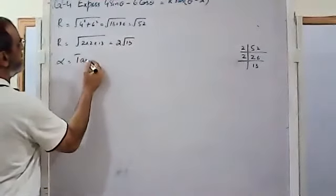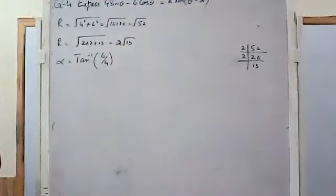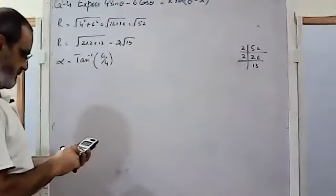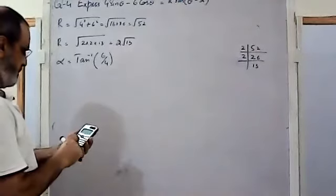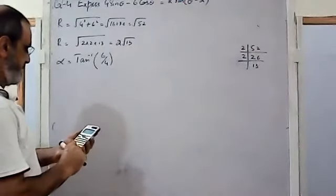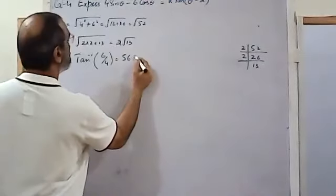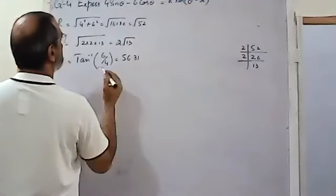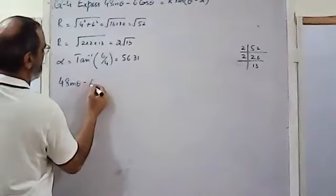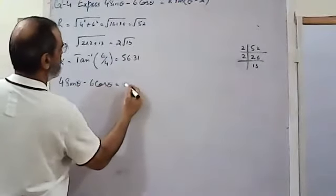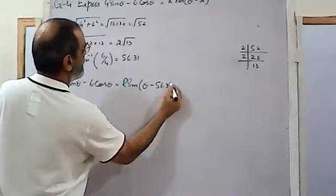Similarly, α = tan⁻¹(6/4). Using the calculator: shift tan of 6/4 gives 56.31°. So α = 56.31°. Therefore the required form is 4sinθ - 6cosθ = 2√13·sin(θ - 56.31°).